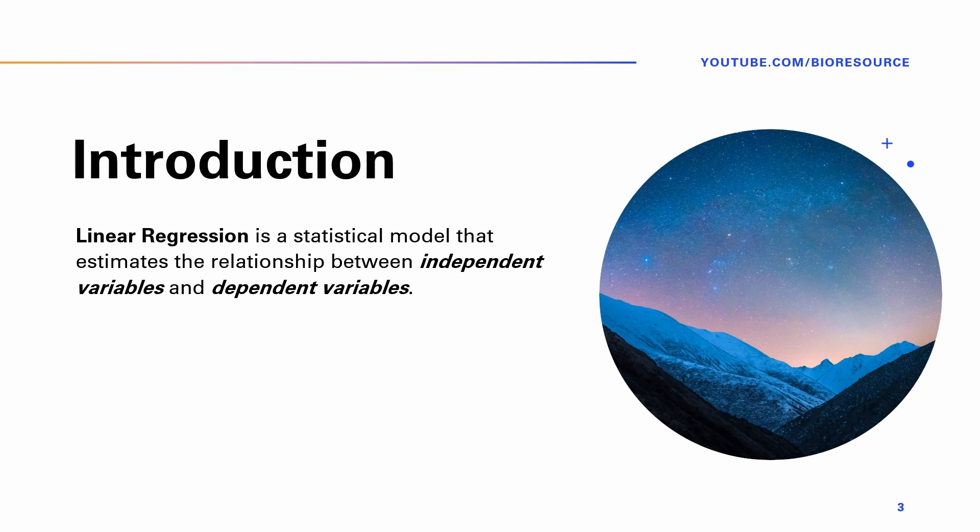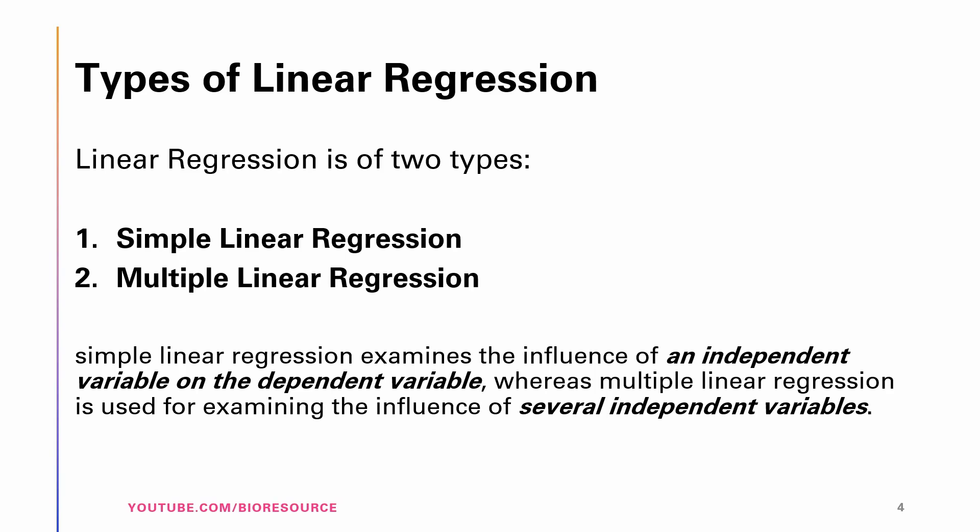The independent variable is also known as the predictor variable or the explanatory variable, whereas the dependent variable is also known as the response variable or the outcome variable.